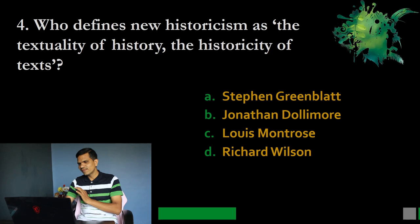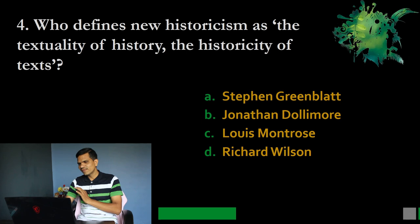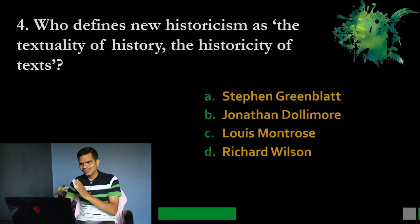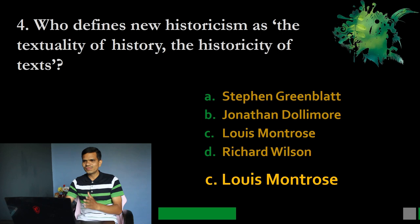Question number 4: Who defines new historicism as 'the textuality of history, the historicity of texts'? Options: A. Stephen Greenblatt, B. Jonathan Dollimore, C. Louis Montrose, D. Richard Wilson. The correct option is C. Louis Montrose defines new historicism as the textuality of history, the historicity of texts.